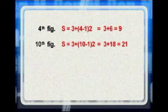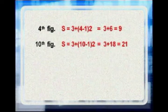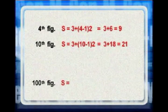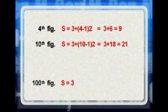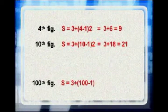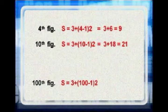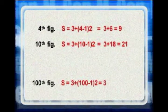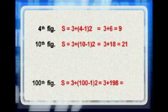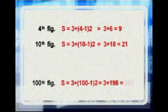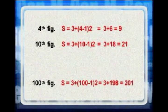What about for the one hundredth figure? The one hundredth figure is S equal to three plus one hundred minus one multiplied by two is equal to three plus one hundred ninety-eight is equal to two hundred and one. We'll need two hundred and one sticks to make the one hundredth figure.